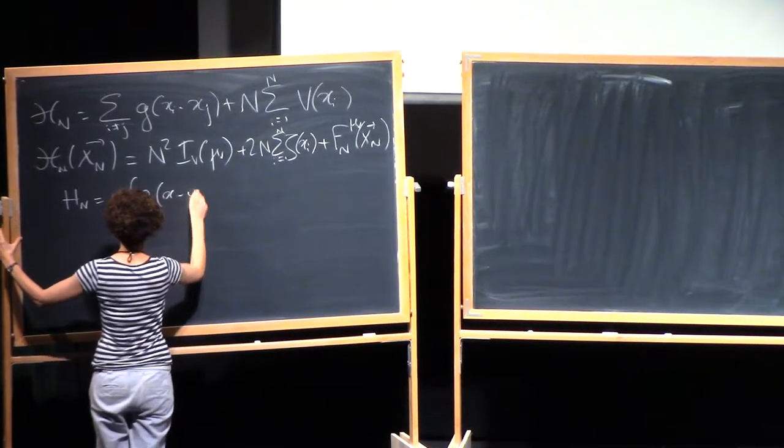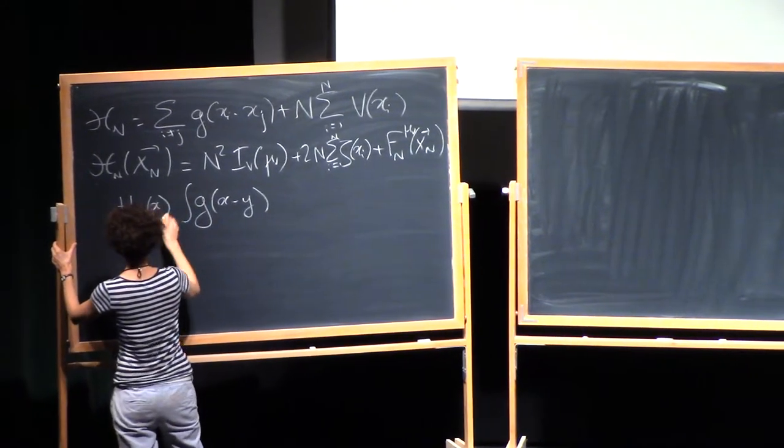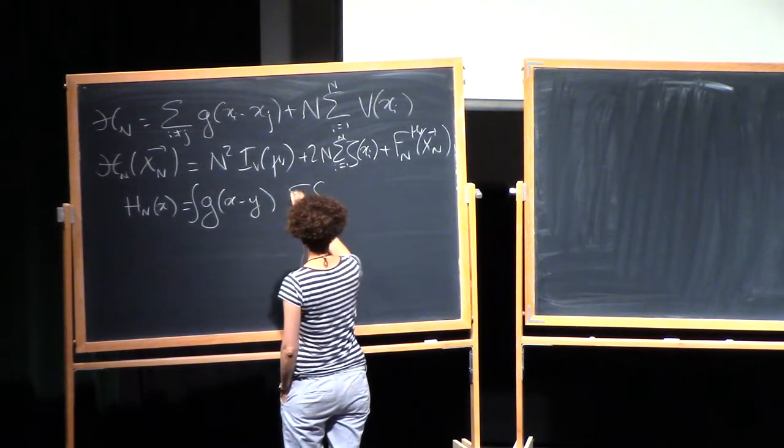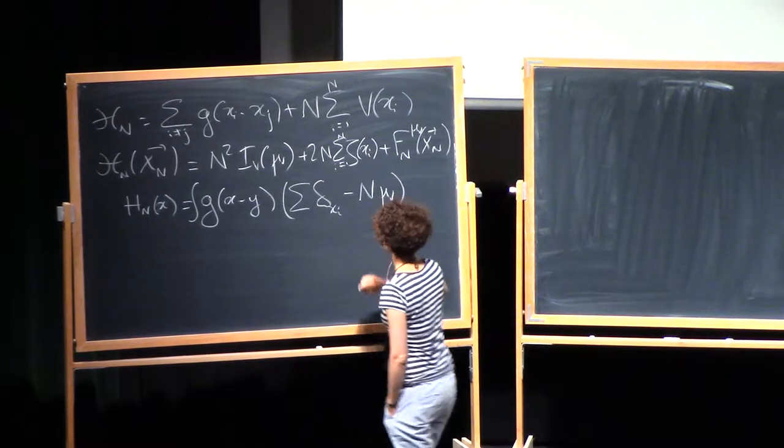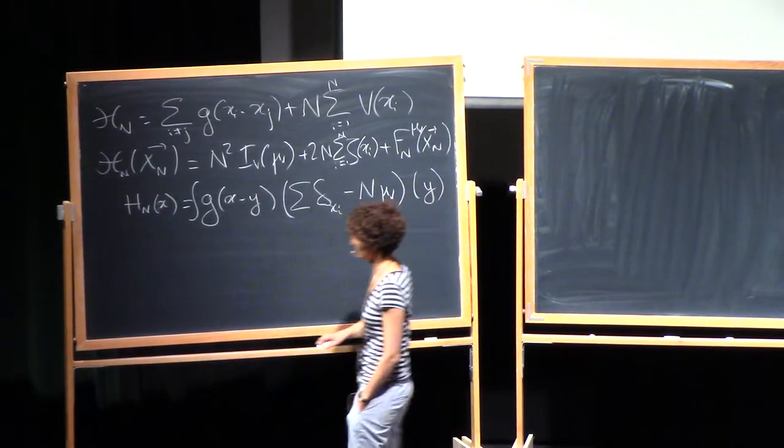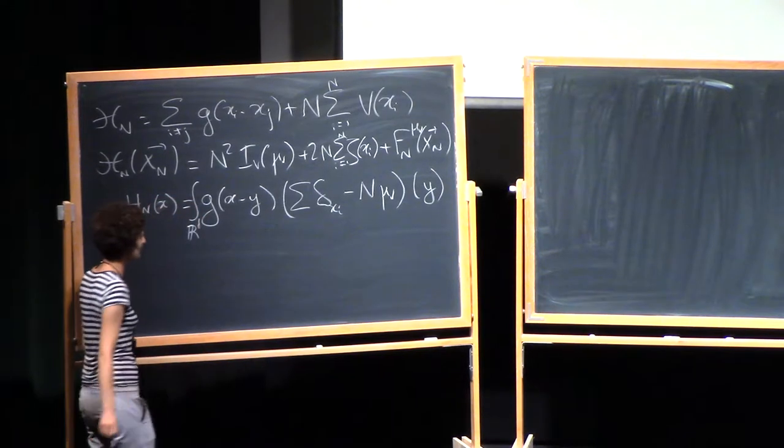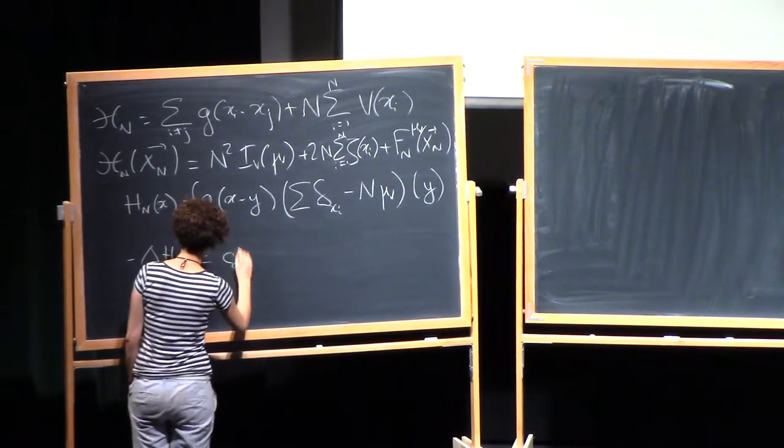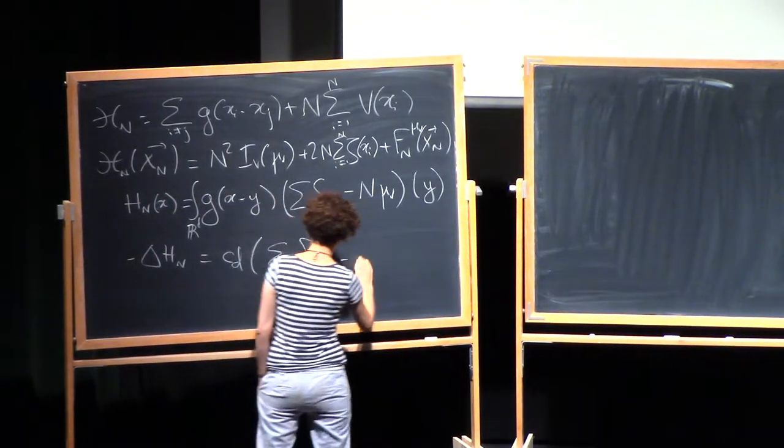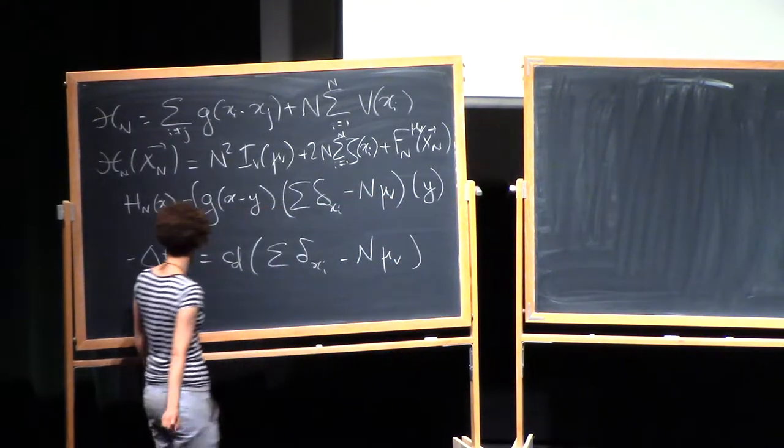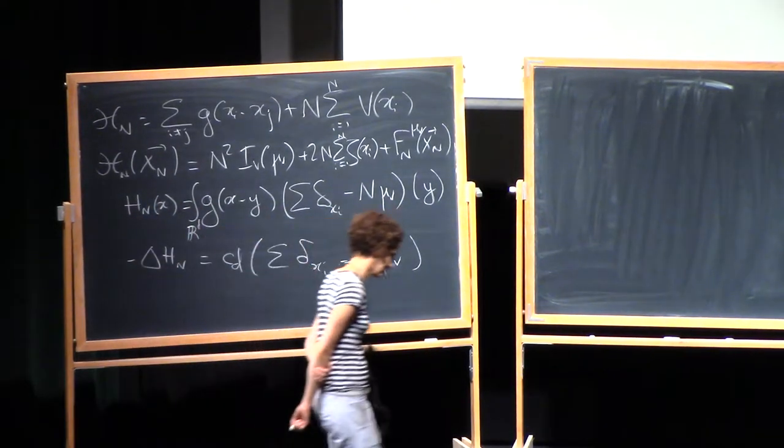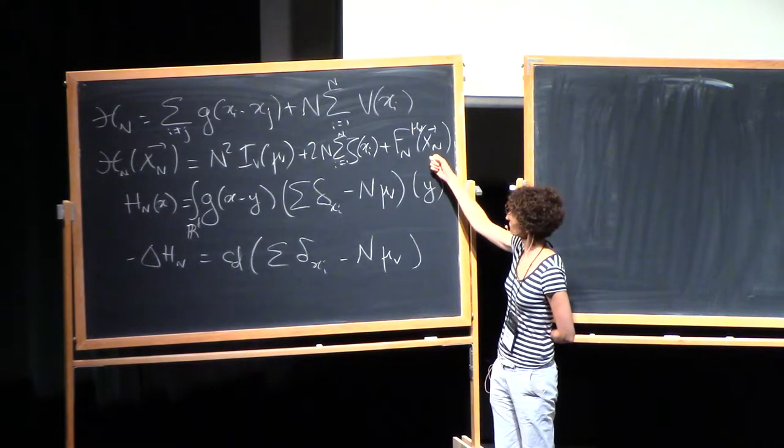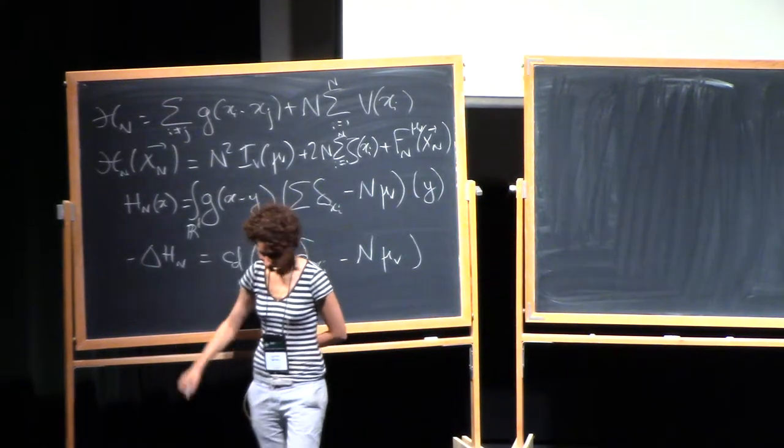It's the integral of G of X minus Y. It depends on X and of course it depends on the configuration. So for each configuration you have a given function. This is the potential. If you remember, it solves minus Laplace H equals sum of Dirac minus n mu v. The point was to prove that this next order energy can be expressed with this electric potential.